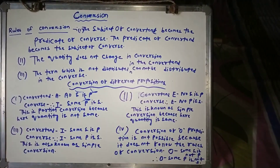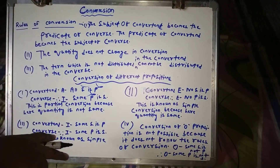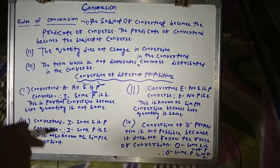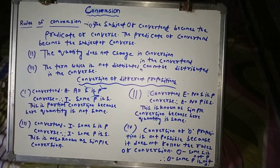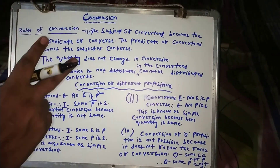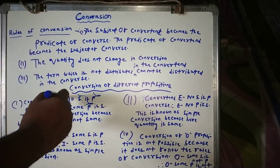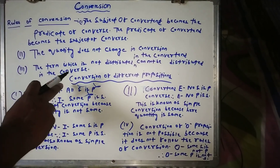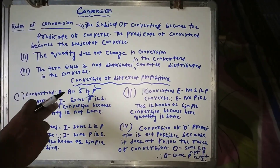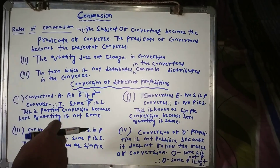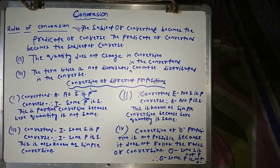Now, the conversion of different types of propositions. The A proposition 'All S is P' converts to the I proposition 'Some P is S.' This is also known as partial conversion, because the quantity changes — the convertent is universal while the converse is particular. So when a universal proposition converts to a particular proposition, it is called partial conversion.